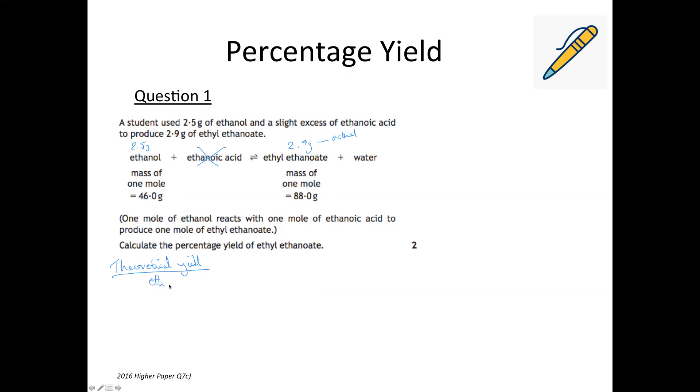So the mole ratio for ethanol to ethyl ethanoate, remember we're ignoring the ethanoic acid because it's in excess, is one mole producing one mole. So then what we do is convert the moles to a mass. So thankfully they've given us the GFM or the mass of one mole. So that's 46 grams of ethanol would give us 88 grams of ethyl ethanoate. We don't have 46 grams though so we're going to find what one gram would give us. So 88 divided by 46 and then we multiply up to the amount we've got which is 2.5.